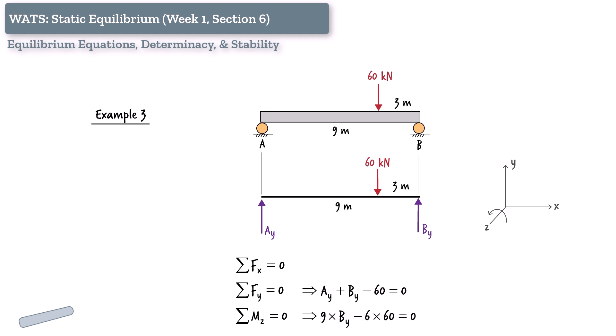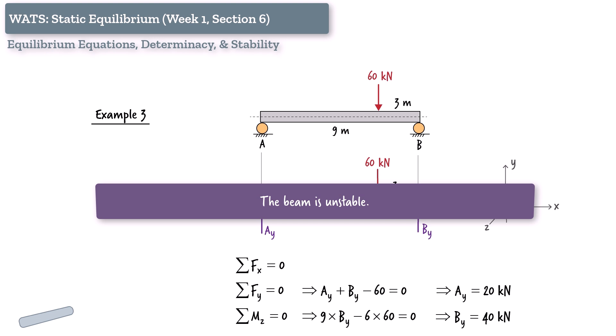Clearly, we can solve these equations for the two unknown forces, which could lead us to conclude that the beam is statically determinate. However, that would be the wrong conclusion. This beam is in fact unstable. Why?